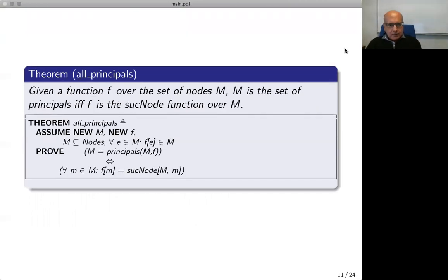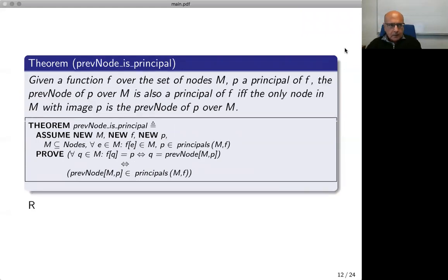We state now one important theorem about this notion. Given a function F over the set of nodes M, M is the set of principals of F if and only if F is the suc node function over M. Another theorem with respect to the prev node: given a function F over the set of nodes M and P a principal of F, the prev node of M over M is also a principal of F if and only if the only node in M with image P is the prev node of P over M.